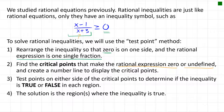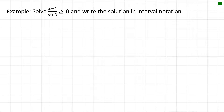In our first example, we solve the rational inequality (x − 1)/(x + 3) ≥ 0. Step one is to rearrange so that zero is on one side and the rational expression is a single fraction — that's already done for us here. Step two: find the critical points that make the expression equal to zero or undefined.